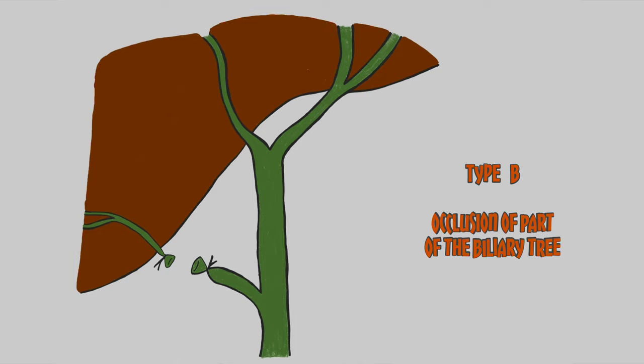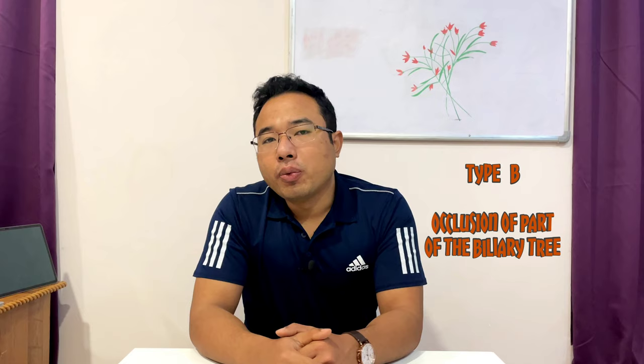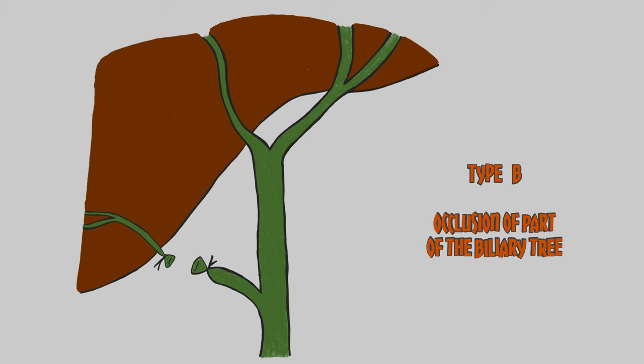Type B is occlusion of part of the biliary tree. When we do cauterization, ligation, or clipping of some tissues, we might sometimes occlude a part of the biliary tree, so that part may not be able to drain into the bile duct.